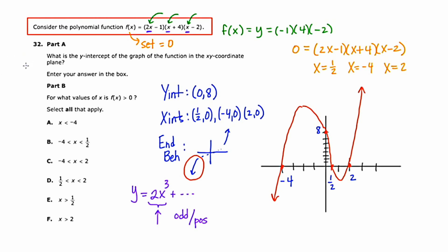So the first question, Part A, says: what is the y-intercept of the graph of the function in the xy-coordinate plane? Now, we did this by hand, and we get the y-intercept to be 8. But if you used your graphing calculator, you could also figure it out that way. So the answer to question A, Part A, is 8.